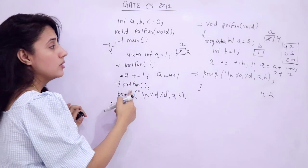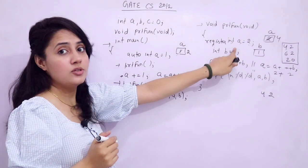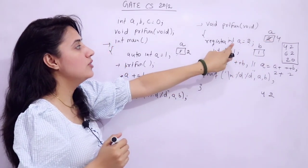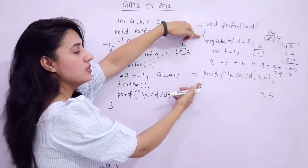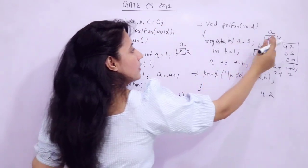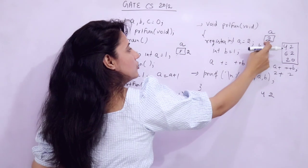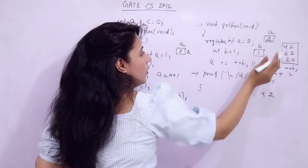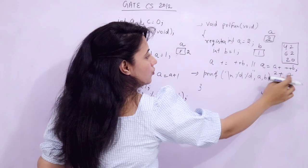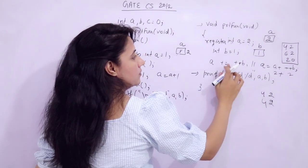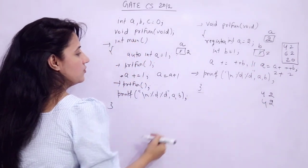The function is called again. 'register int a = 2' — this is not static, so it is re-initialized to 2 each time. The lifetime of this variable is within this block only. int b = 1 again. Again ++b makes b = 2, and a = 2 + 2 = 4. So again 4 is printed, and b is also 2, giving output 4 2.